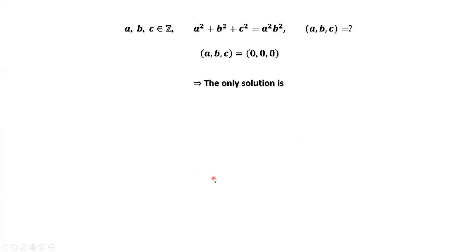We have discussed all situations. Here is the conclusion: the only solution is the zero solution, A equals B equals C equals zero. Thanks for watching, and I'll see you next time.